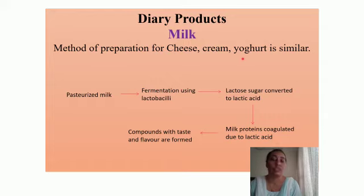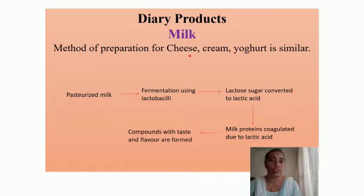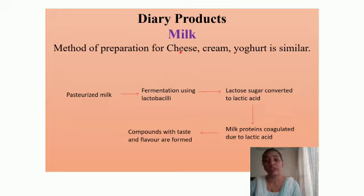Curd is prepared at home by adding a little bit of curd to milk — that little quantity of curd we can call the inoculum. The milk is taken slightly warm because this increases bacterial activity and makes the process faster. The inoculum is added to warm milk, kept undisturbed for a few hours, and then it sets into a solid form. Yogurt, however, requires specific bacteria to be added to produce it, which makes it different from curd.